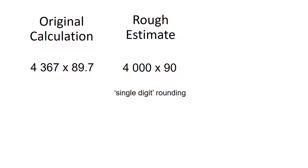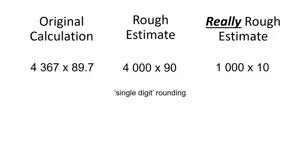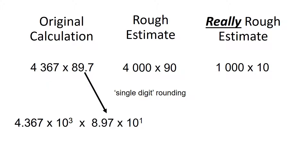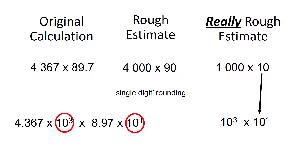If we're going to do a really rough estimate, we round it off to 1,000 times 10. Now, this is obviously going to give you a pretty rubbish answer, but bear with me, because you need to understand the principle. The number 4,367 can be written as 4.367 times 10 to the 3, while 89.7 can be written similarly. That 1,000 is the 10 to the 3, the power on the first number. Similarly, that 10 in our really rough estimate is 10 to the power of 1. This is sometimes called order of magnitude rounding.